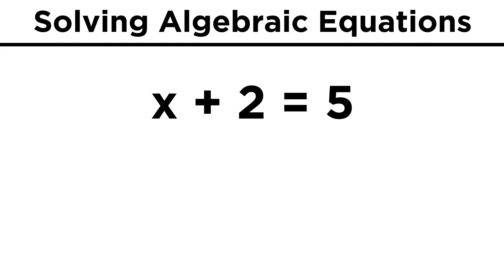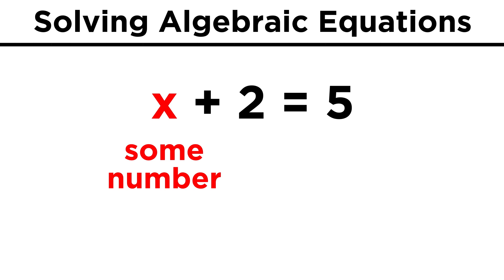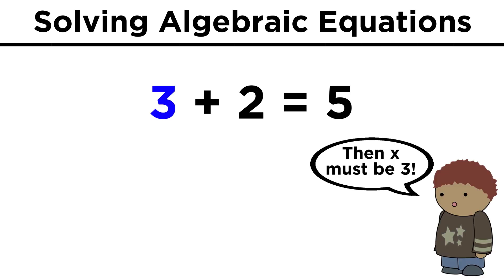Take something like x plus two equals five. What this is telling us is that there is some number x, such that when we add two to it, we get five. We can probably just use common sense to realize that this number must be three, because when we add three and two, we get five.